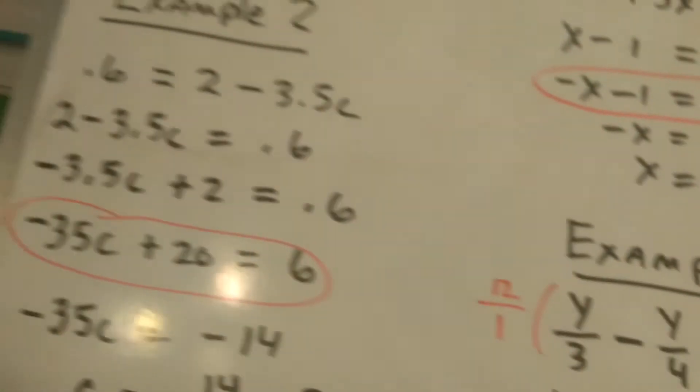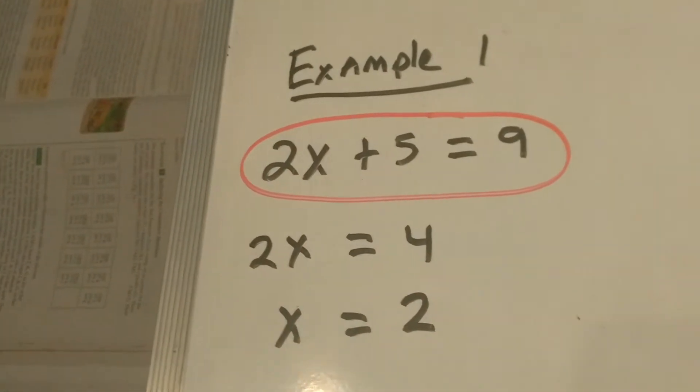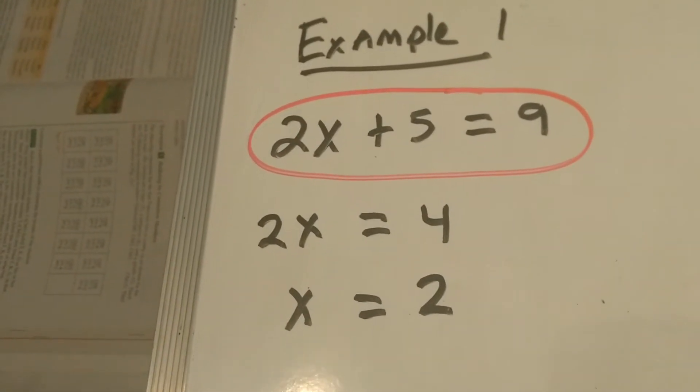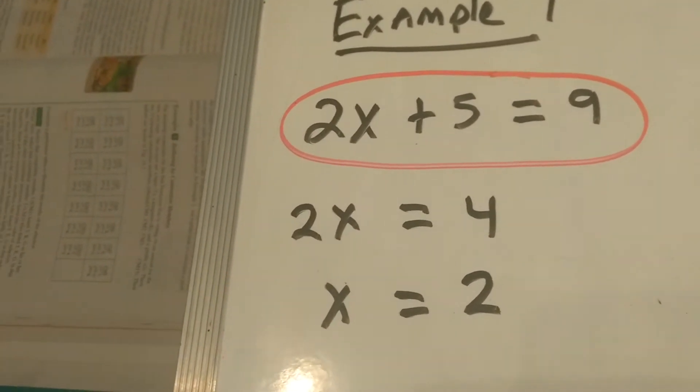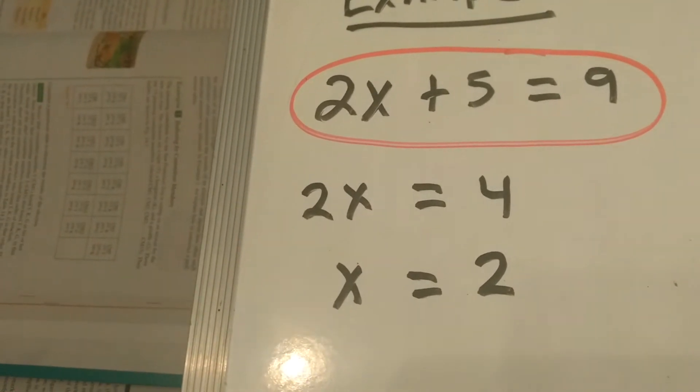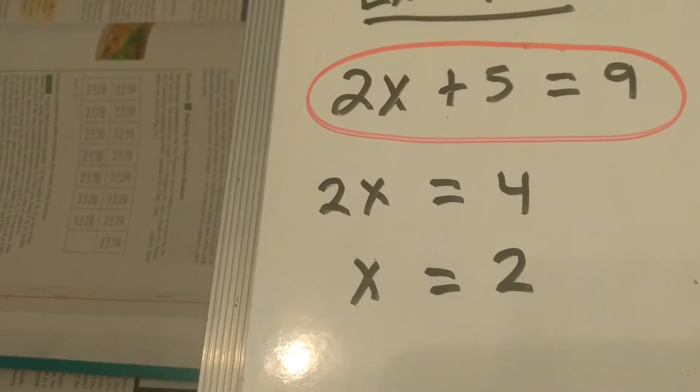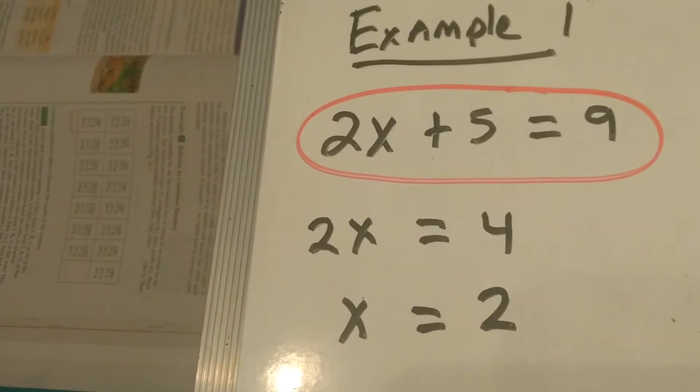When we talk about a two-step algebraic problem, we're talking about this form right here where they have it circled in red, where the variable number, 2x, is in the front on the left side. It's being added and subtracted. When something's being added or subtracted to it, it's always equal to a number, a constant. It's a two-step form.